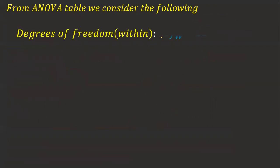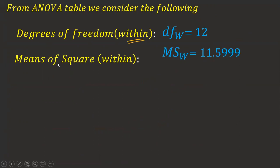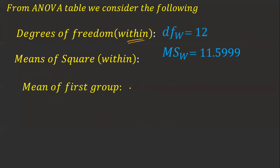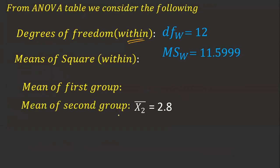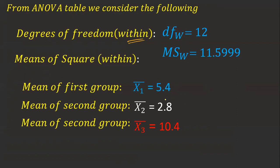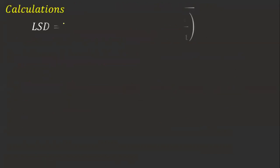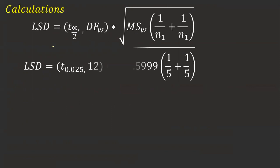Now we will be calculating values from the ANOVA table. We are considering these two values: degrees of freedom within is 12, and mean squares within, MSW, is 11.59 — this I have already calculated. I also take the mean of the first group, the mean of the second group, and the mean of the third group, all of which have been calculated. Now I am using the LSD calculation — how to calculate LSD.